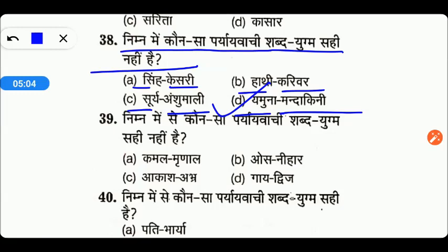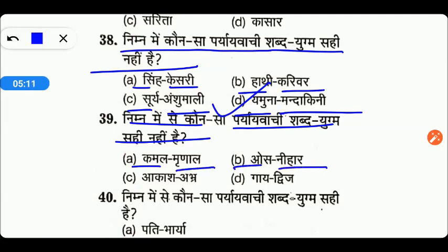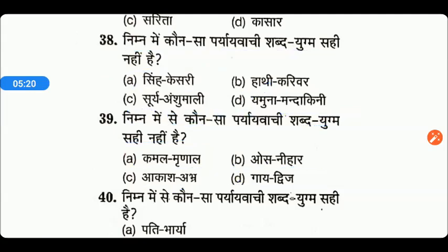Next आते हैं: निम्नलिखित में से कौन सा पर्यायवाची शब्द युग्म सही नहीं है? तो friends, यहाँ पर D again right answer है — गाय का द्विच नहीं होता है।